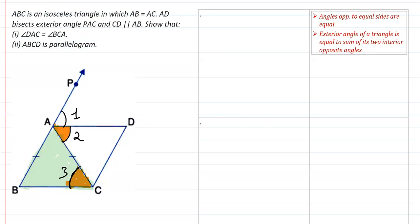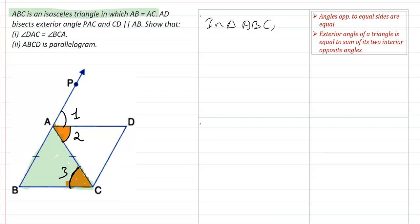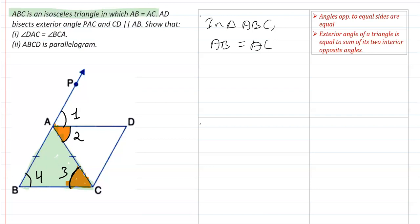For Part 1, we'll prove angle 2 equals angle 3. First, in triangle ABC, AB equals AC. Since angles opposite equal sides are equal, the angle opposite AB is angle 3 and the angle opposite AC is angle 4. Therefore, angle 3 equals angle 4. Let's mark this as Equation 1.